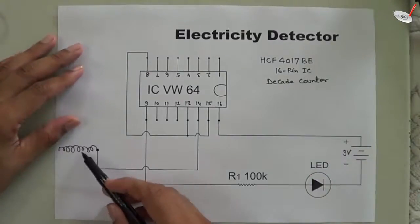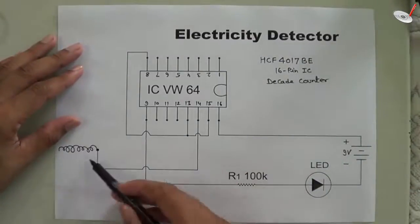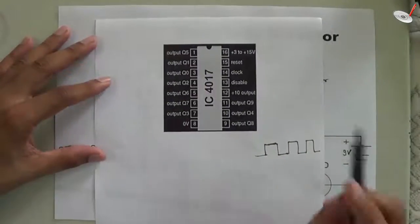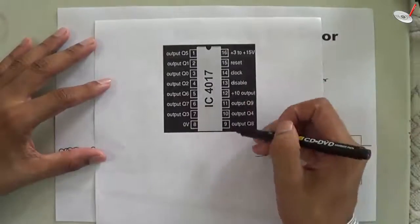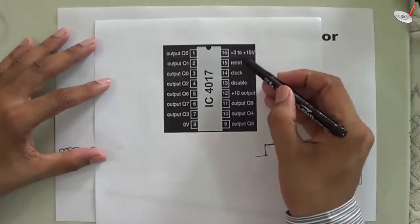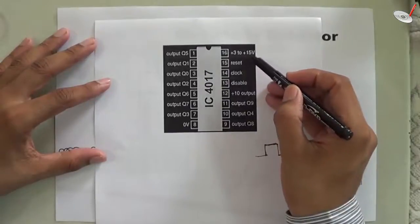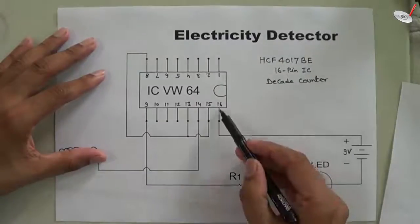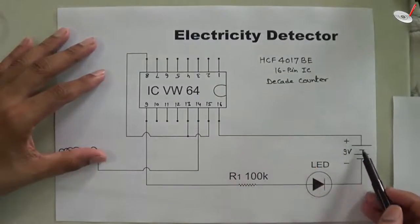So on pin number 16, we have to connect one supply that may be from 3 volts to 15 volts. You can see in the diagram, at pin number 16, we have connected a supply of 9 volts.